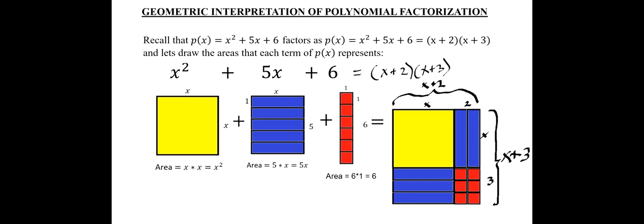the final configuration of using our Lego blocks in the left-hand side gives us the right-hand side. This rectangle, which is, as on the top edge, it's X and 2, so it's X + 2 long. And on the right edge, or left edge on the height,